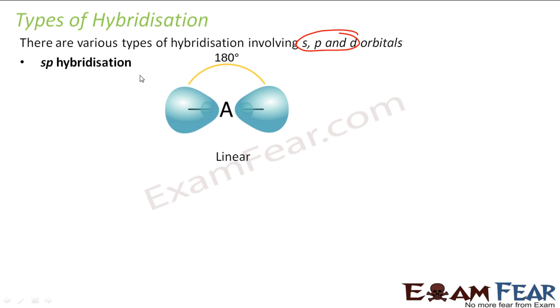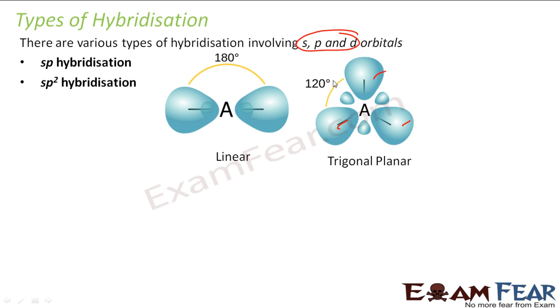The first is sp hybridization. So here s and p orbitals mix to give linear shape. Then we have sp2 hybridization which has a trigonal planar shape. Here 3 orbitals are there, so you get 3 orbitals all with the same energy and shape.